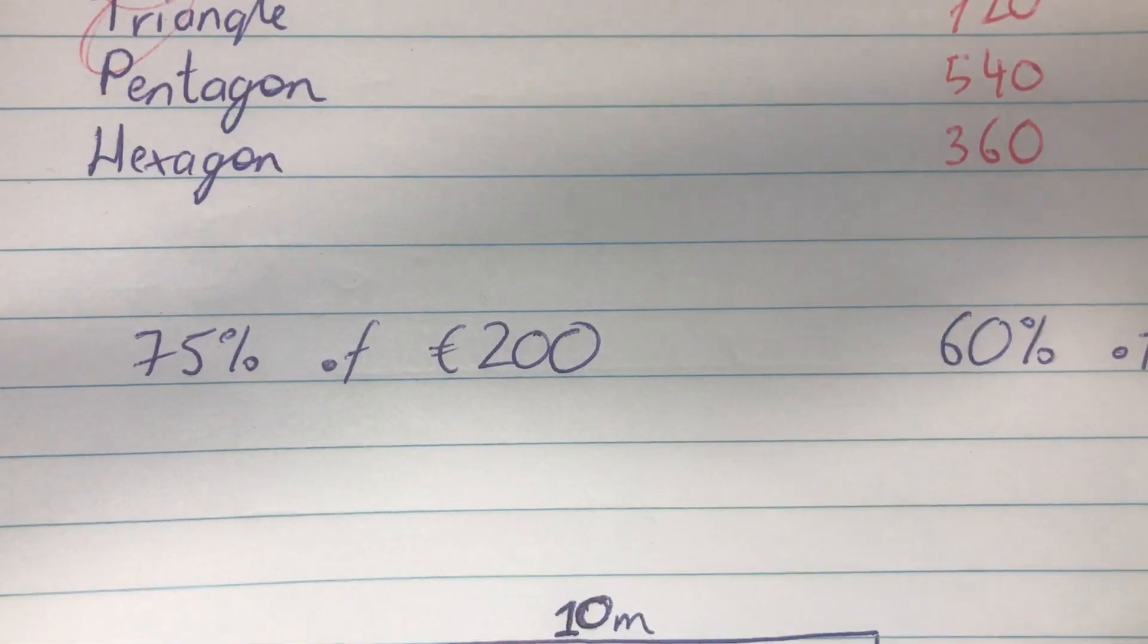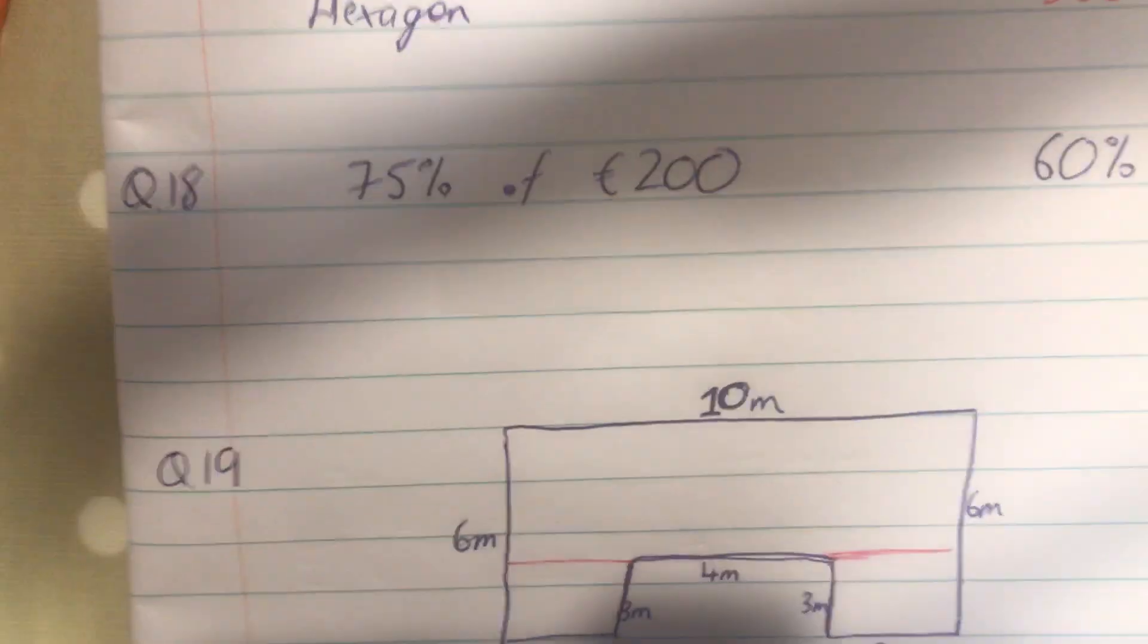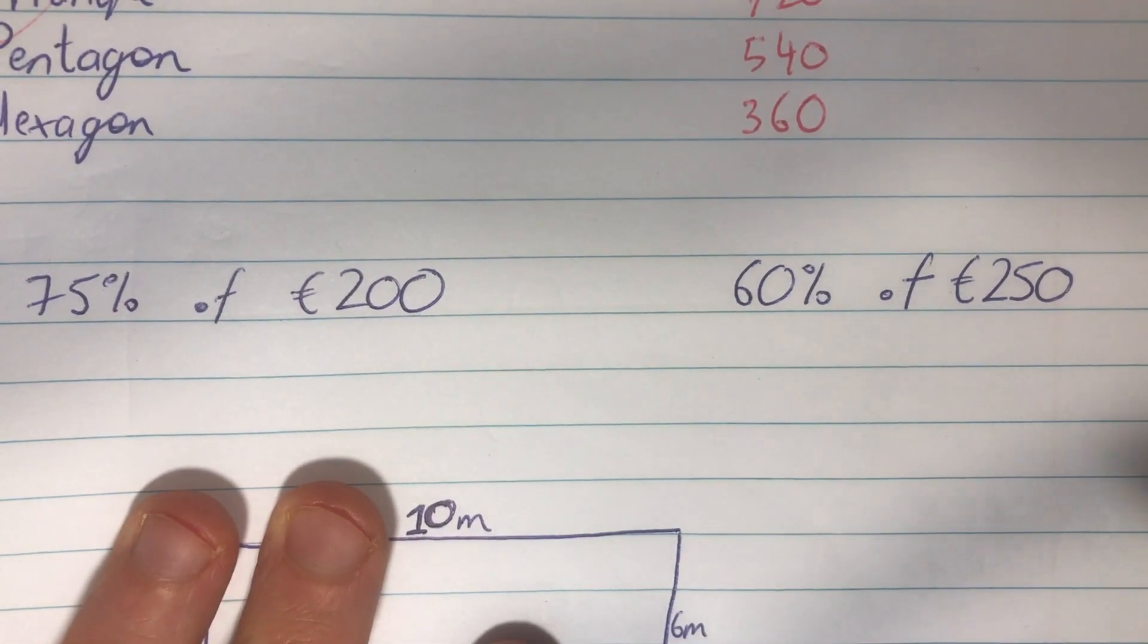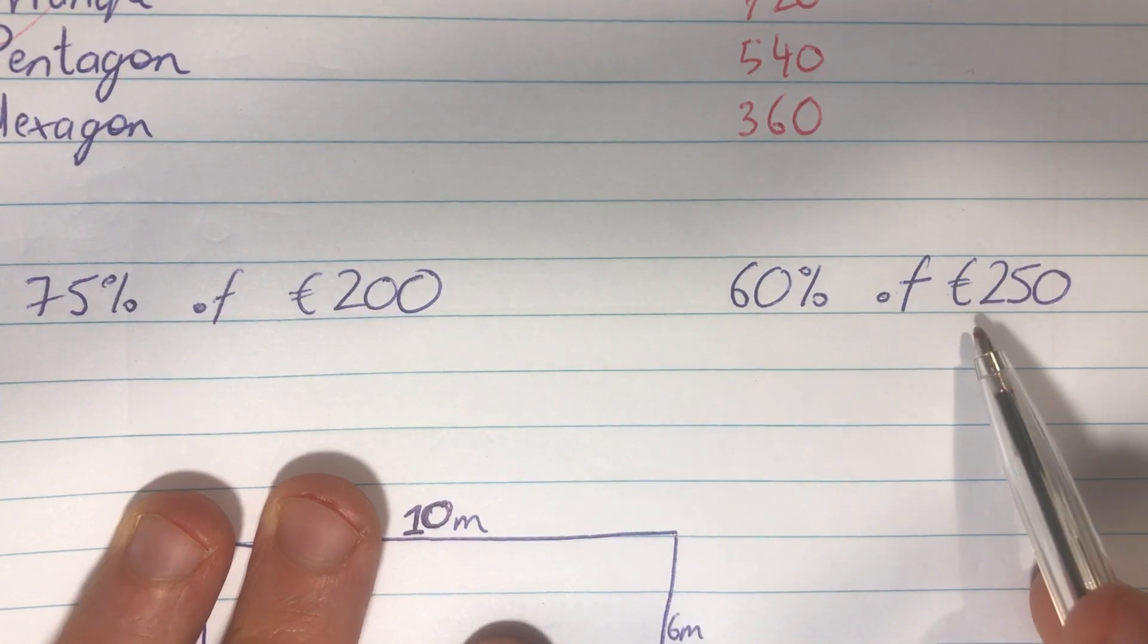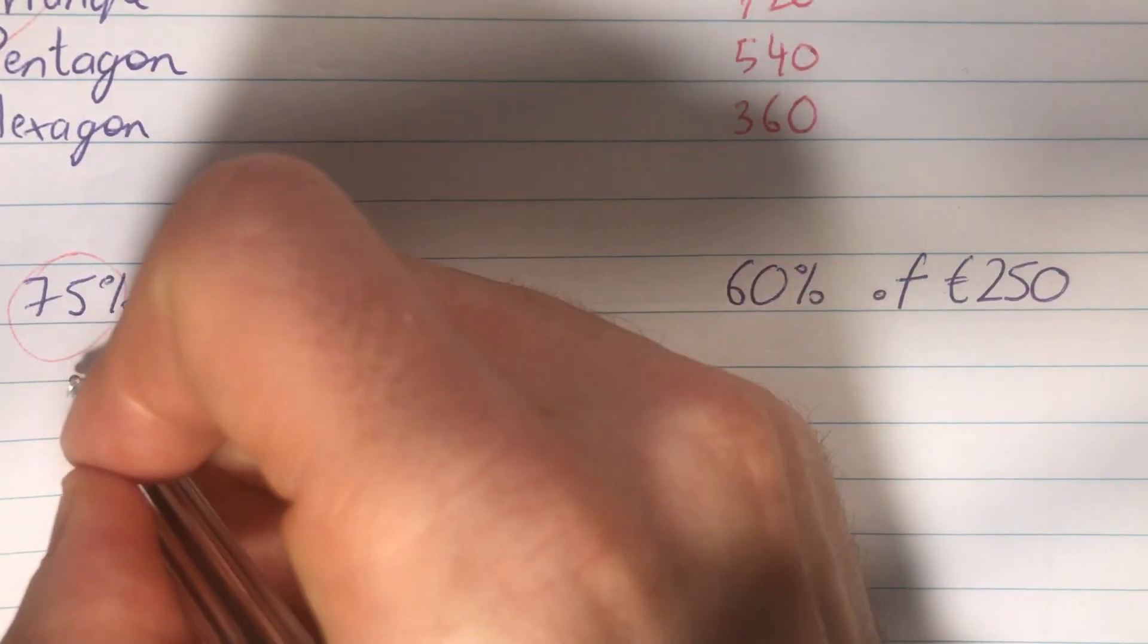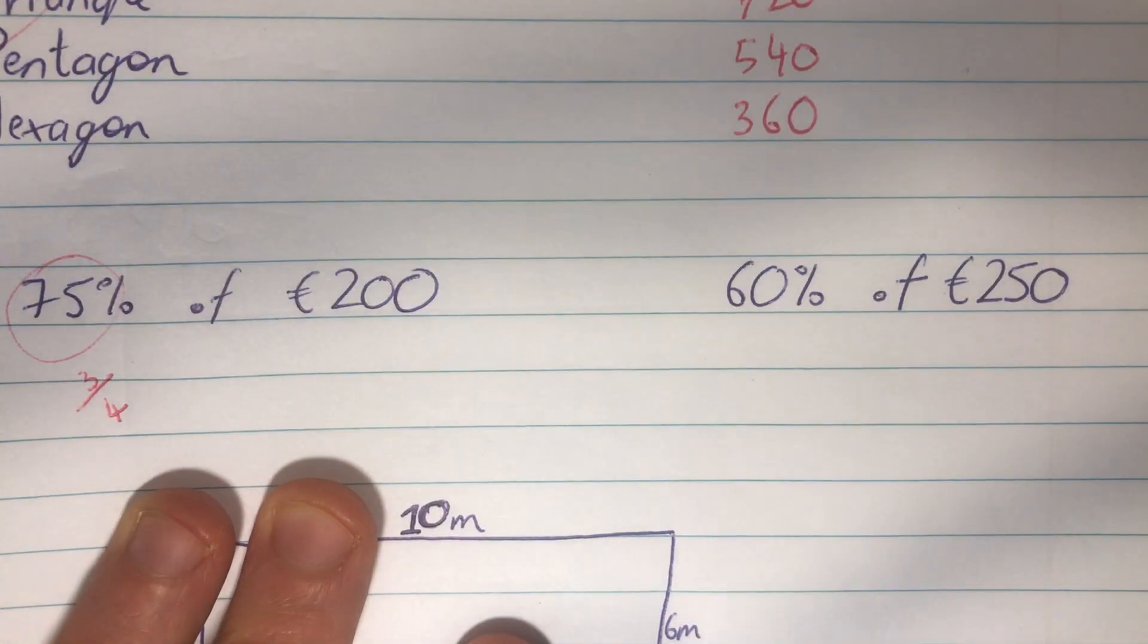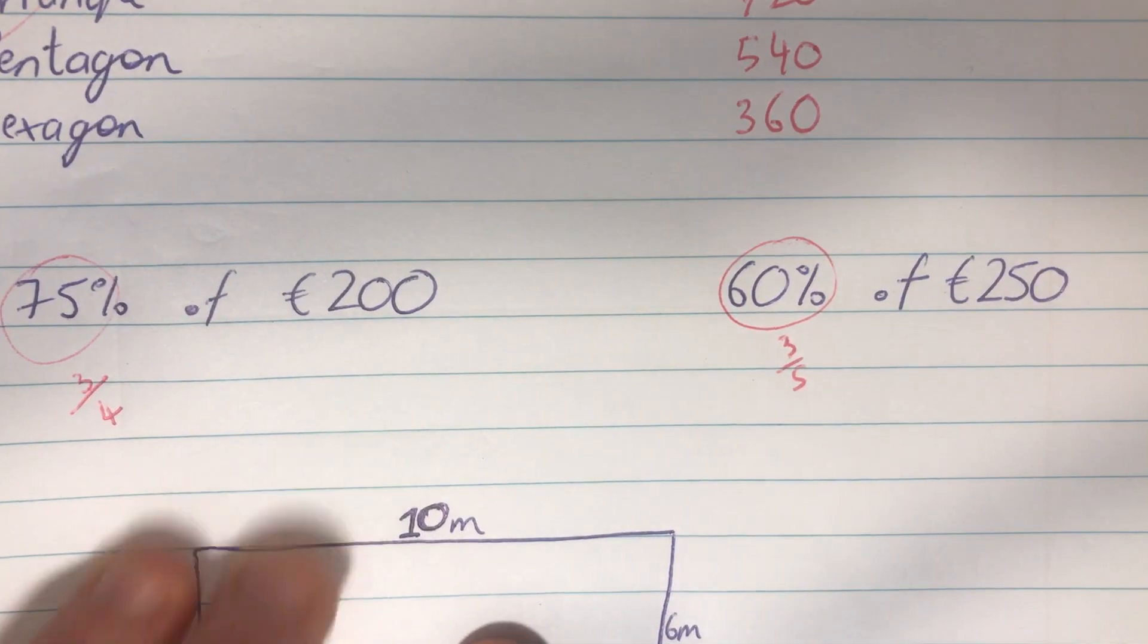Question 18. Just let me zoom off a little bit here. So, they want us to tell which is bigger. 75% of 200 euro, or 60% of 250 euro. So, change that to a fraction, like I've always said, and we'll be moving on to percentages later this week. So, it's 3 quarters of 200, change that to a fraction, 3 fifths of 250.